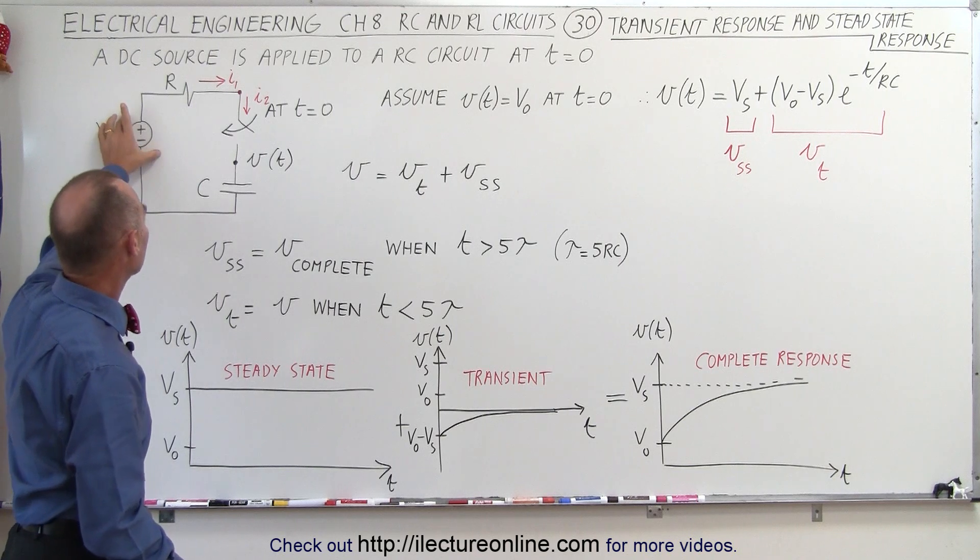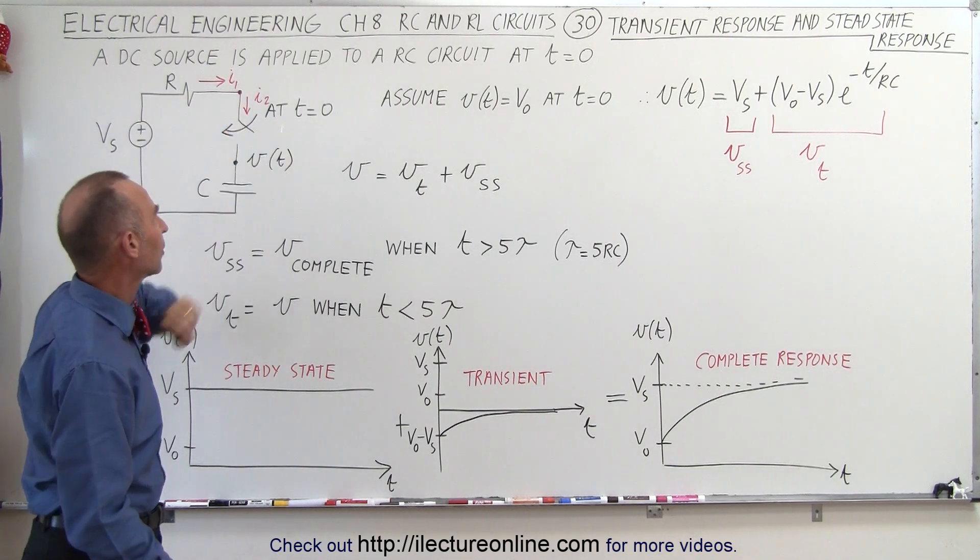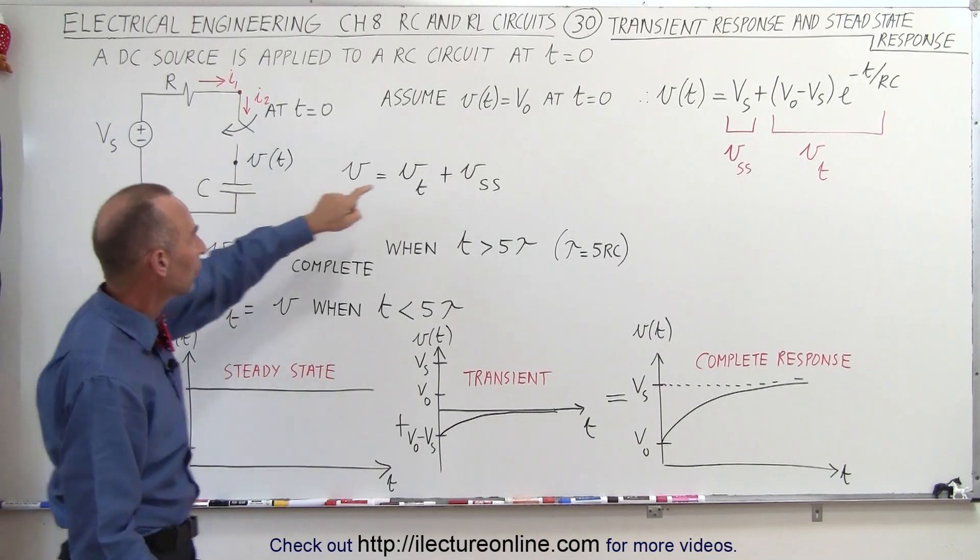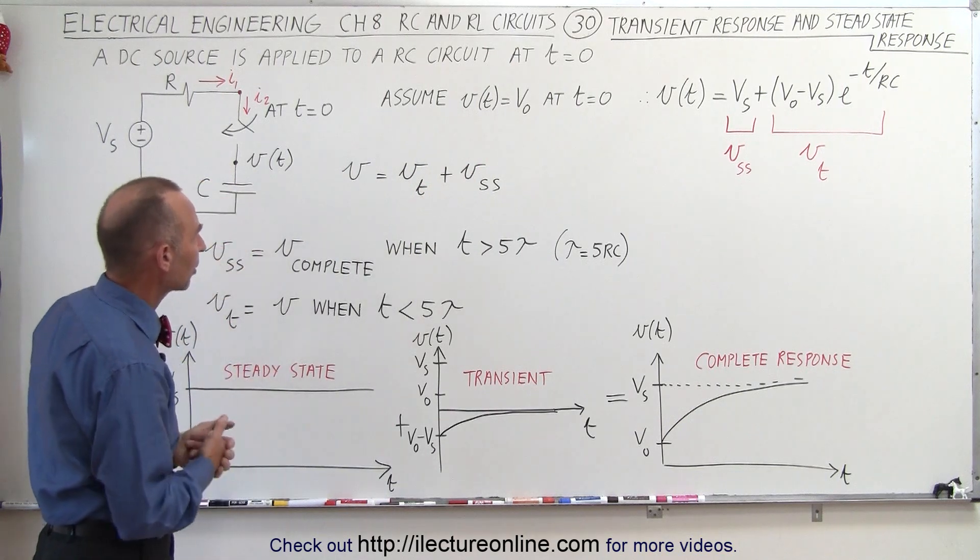We have a circuit with a voltage supply, a resistor, a capacitor, and a switch that closes at time equals zero. We're going to assume that at time equals zero, there's some voltage across the capacitor. There's some charge on the capacitor.